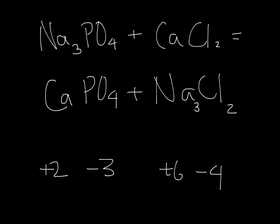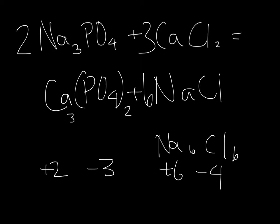So in order to balance this out, we would need 2 sodium phosphates and 3 calcium chlorides. Our new equation would be Ca3(PO4)2, and then we would have Na6 and Cl6. Now we could just combine it and know that we have 6 sodium chloride molecules.